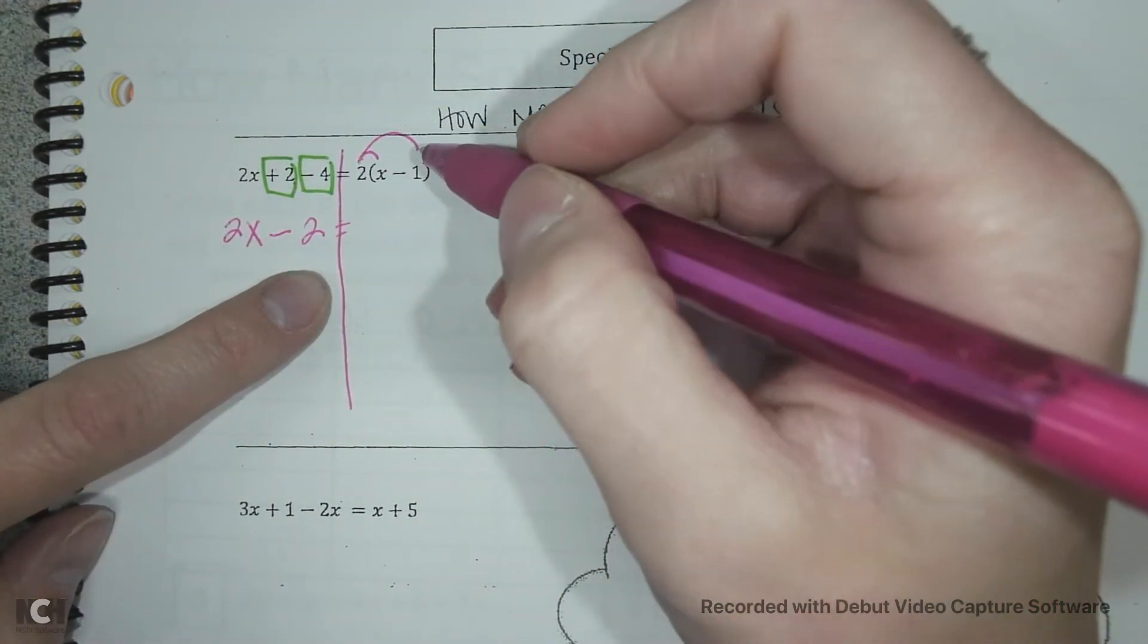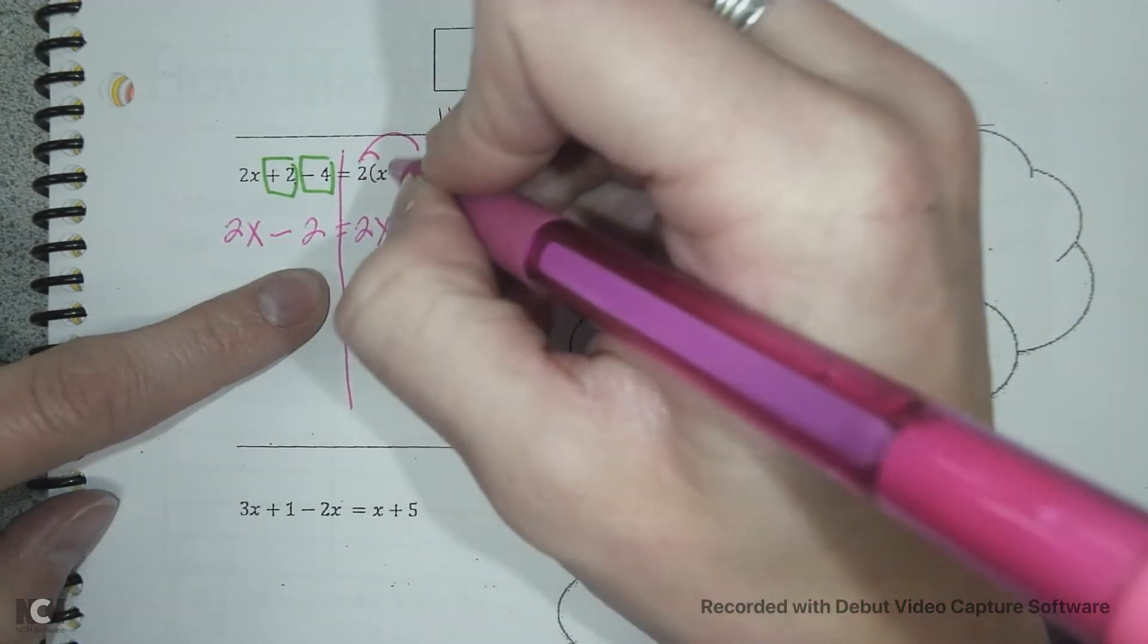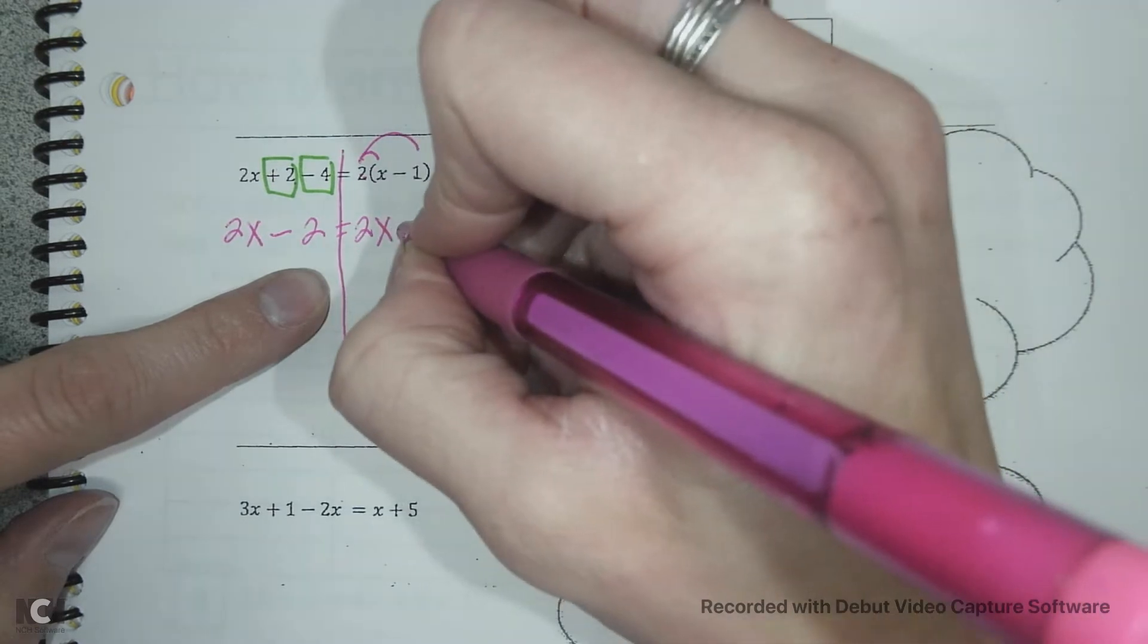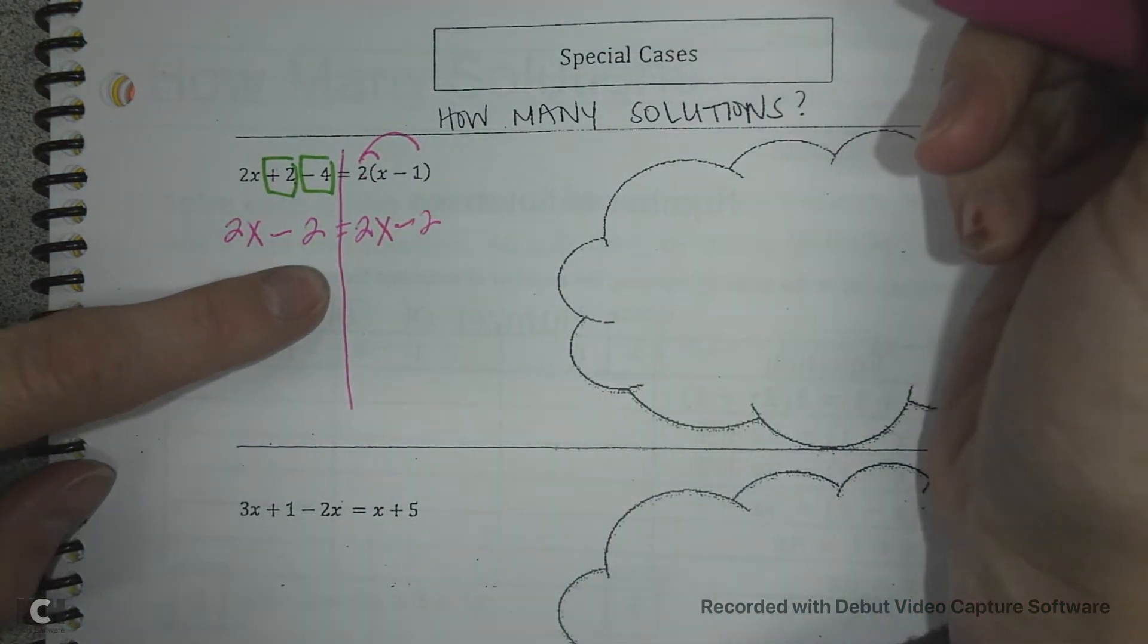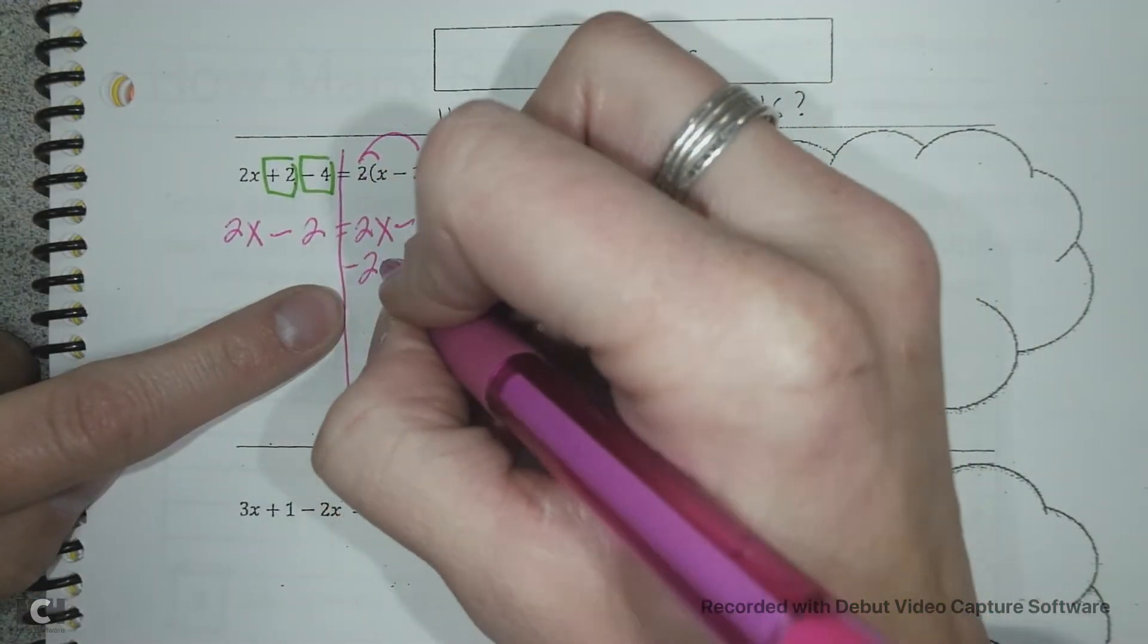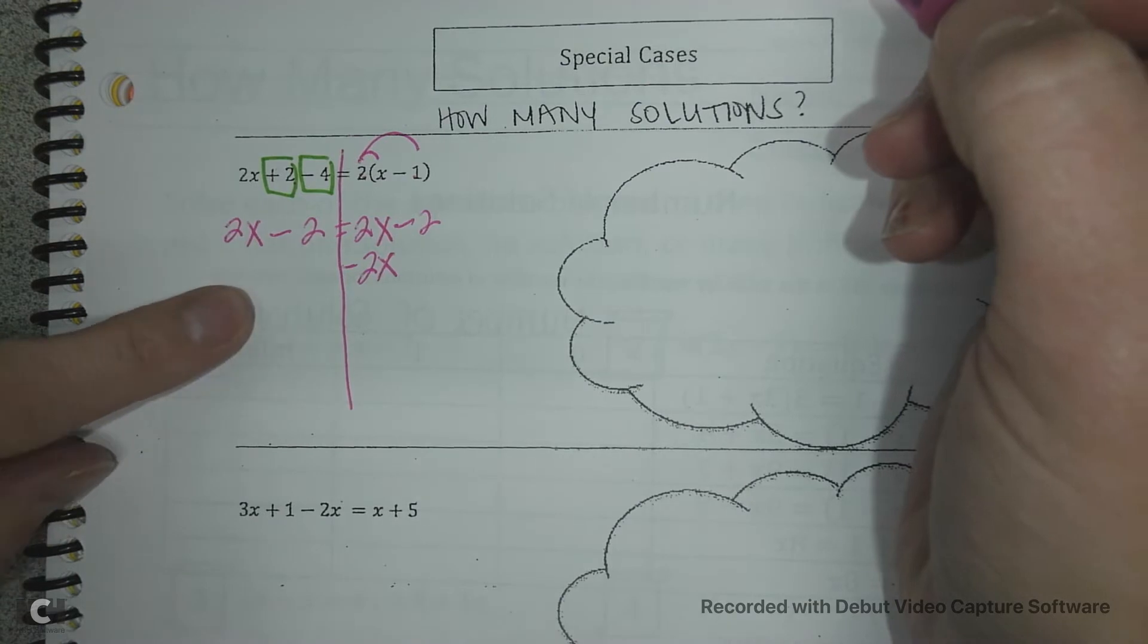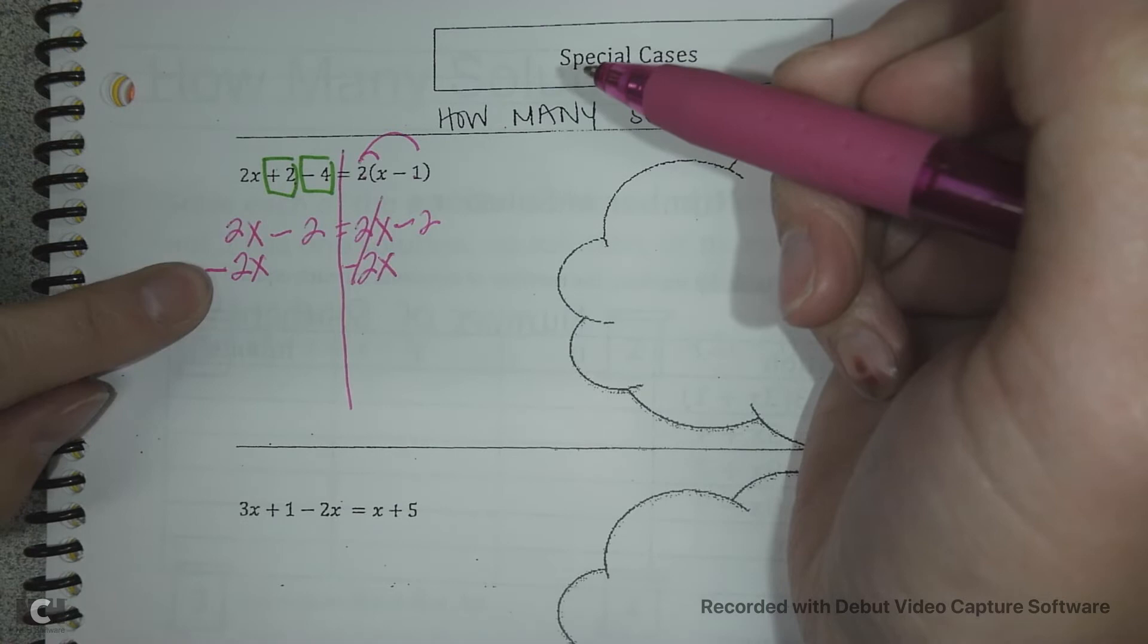Over here we're going to distribute. So multiply 2 times x is 2x and 2 times negative 1 is negative 2. Again, it's helpful to move the letters first. So I'm going to get rid of the 2x on this side by doing the opposite. Subtract 2x. What I do to one side I have to do to the other and I have to combine it with its like term.